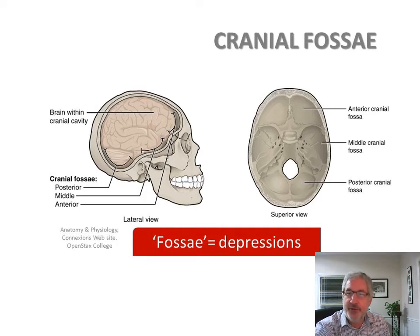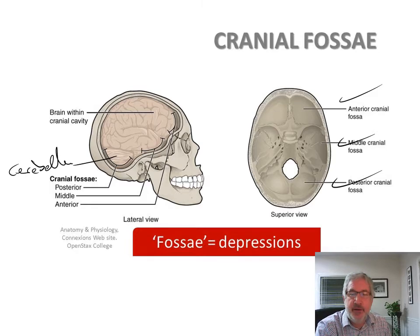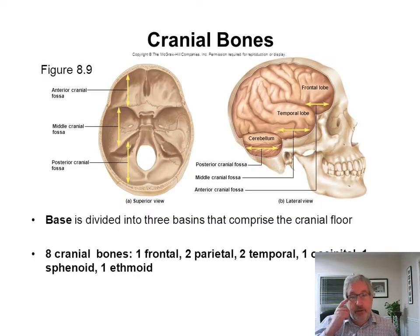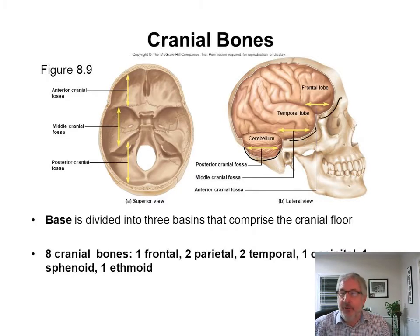Here's the fossa: the frontal lobes are sitting in the anterior cranial fossa. Temporal lobes are in the middle one. And the cerebellum is sitting back in the posterior cranial fossa. The fossa is a depression, as you recall from the skull. It's eight cranial bones, and you have the occipital bone holding on to the cerebellum, with the middle and anterior cranial fossa there.